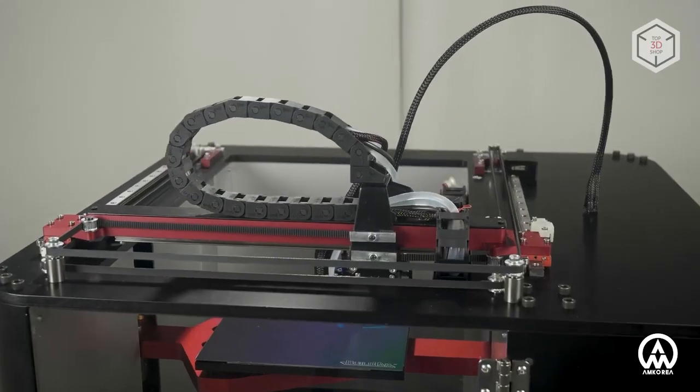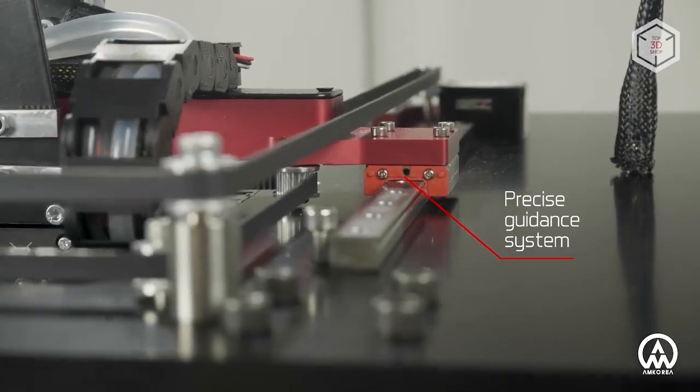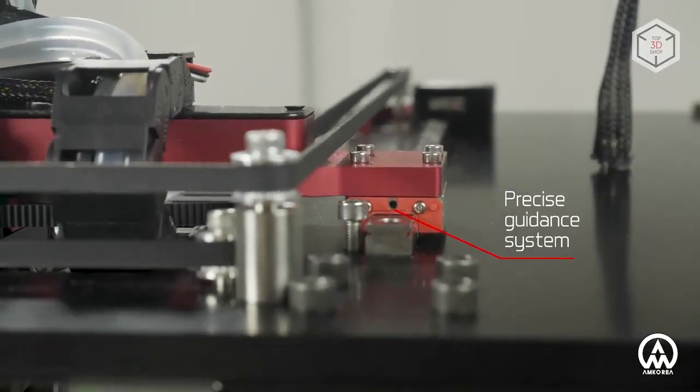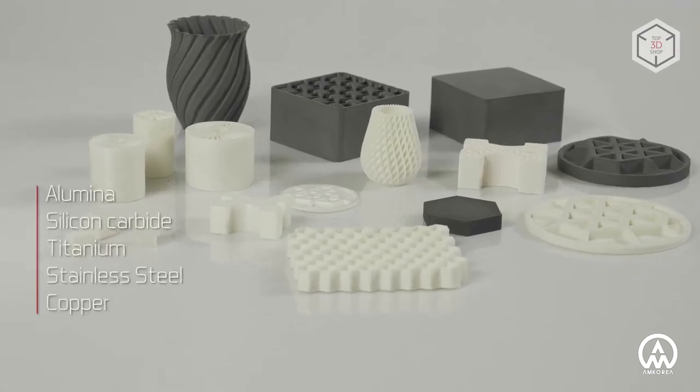The body of the machine has a rigid steel frame and rail guides, traditional solutions guaranteeing stable printing. Additional options include the possibility of printing with metal-filled filaments: titanium, copper, and stainless steel.